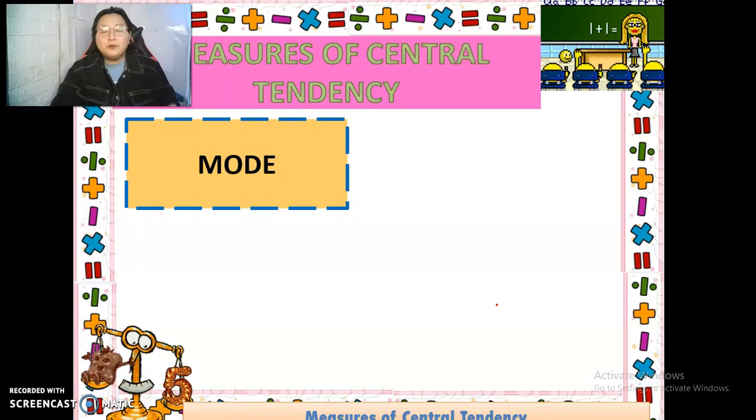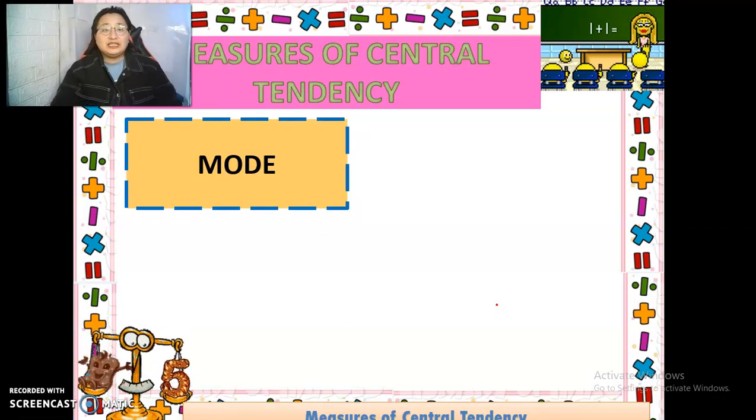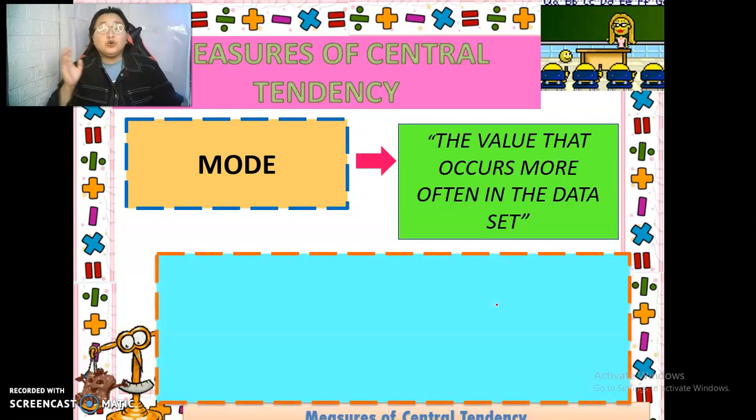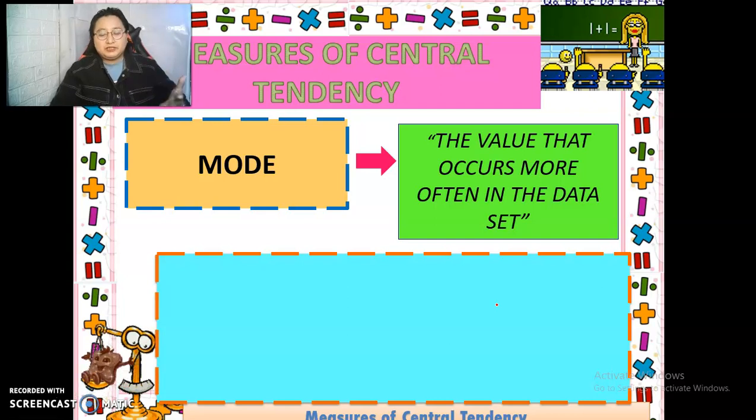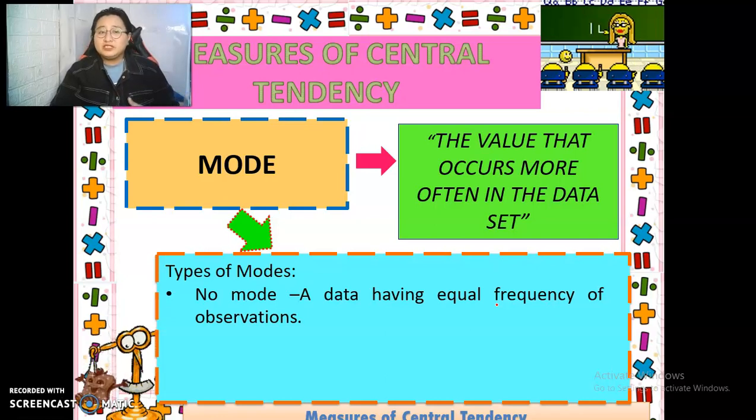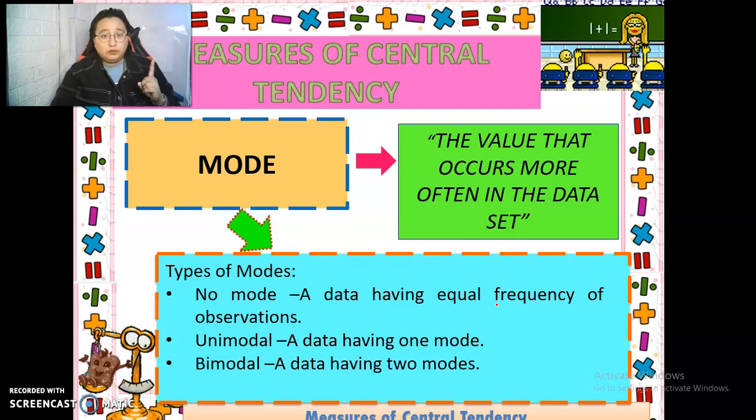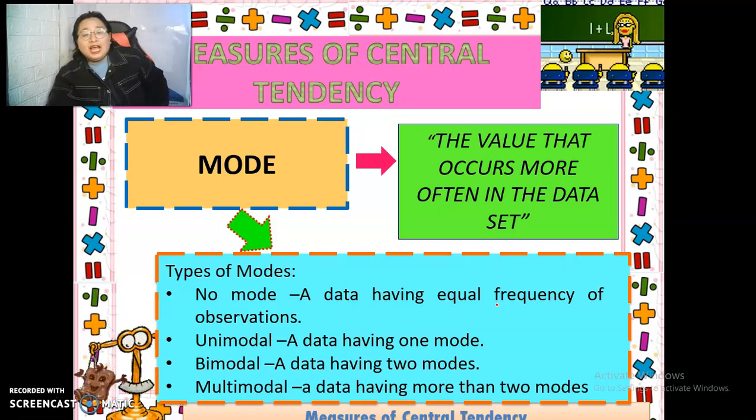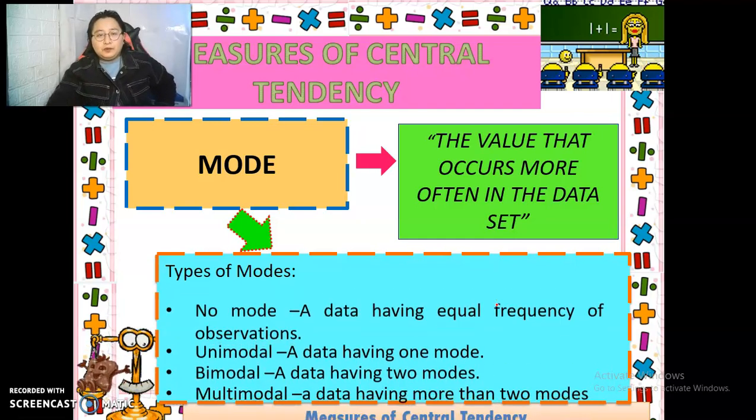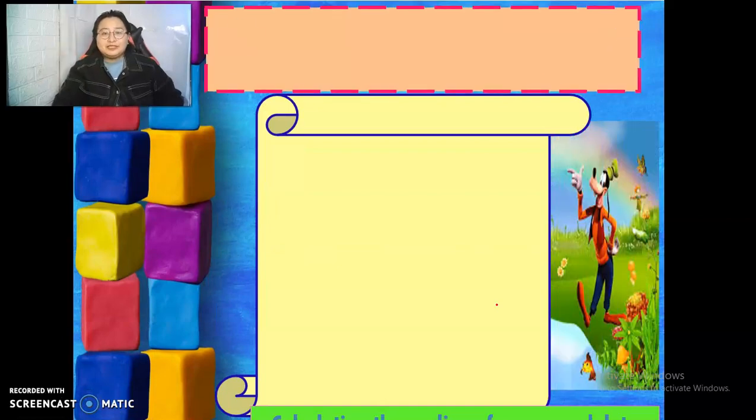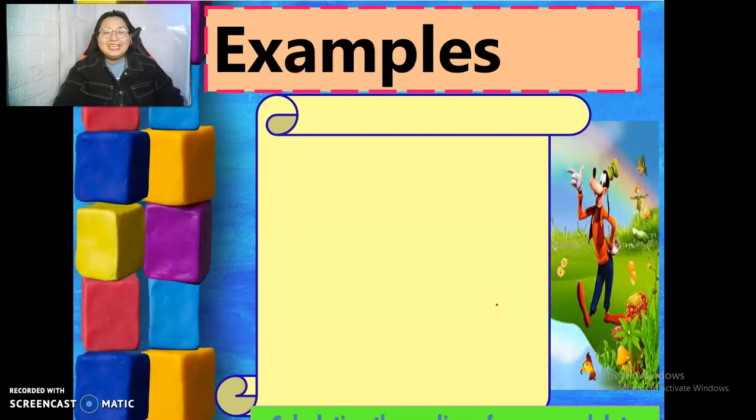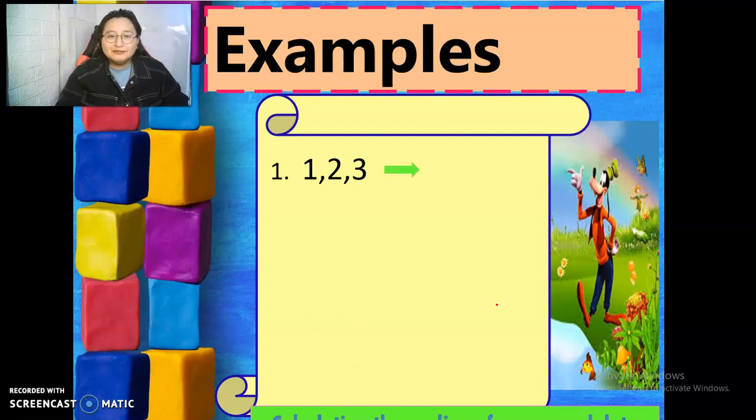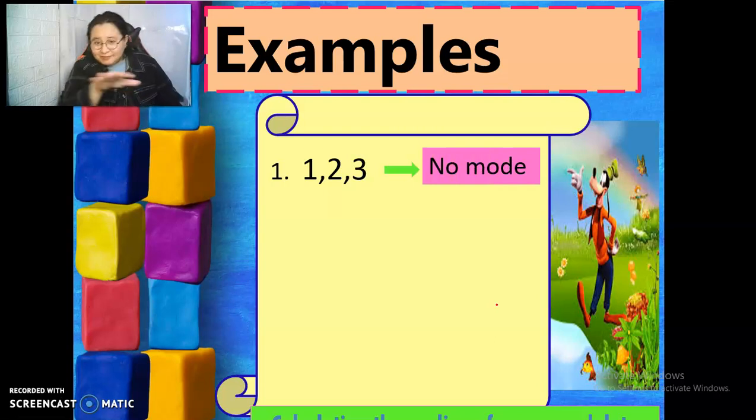Now we have the mode. When we say the mode, this is the value that occurs more often in the data set. So it always appears in the data set. There are types of modes. We have no mode or a data having equal frequency of observation. Unimodal, a data having one mode. Bimodal, a data having two modes. And multimodal, a data having more than two modes. Number one, 1, 2, and 3. What is the mode? Of course, there's no mode in this. All data have the same number of data. No mode.